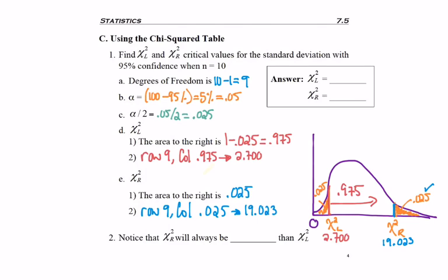One of the things you should notice when you're looking up chi-squared left and right, is that chi-squared right is always going to be larger than chi-squared left. Hopefully that makes sense. If we're starting at zero and we're moving down a number line, the value furthest on the number line will always be the largest number.